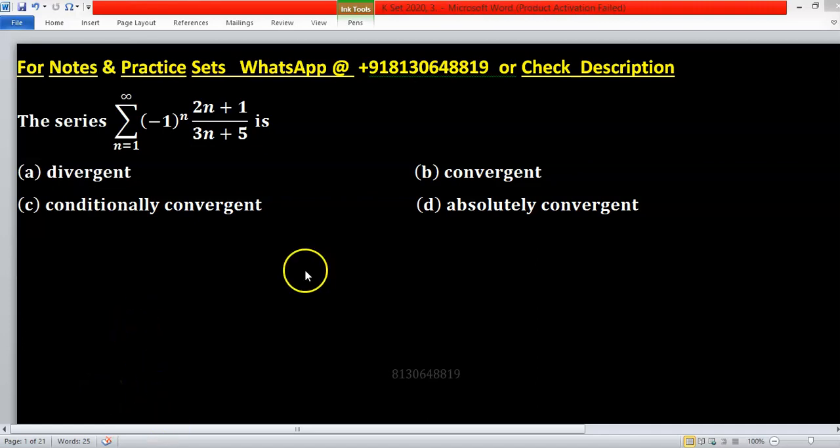For absolute convergent, we first make this alternating series as a positive term series. Then this one can be written in terms of positive term series 2n plus 1 upon 3n plus 5.